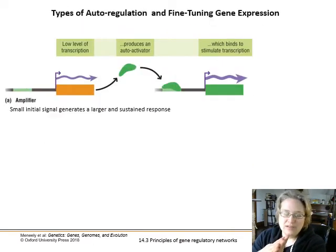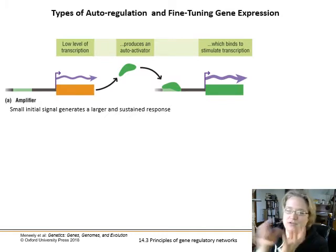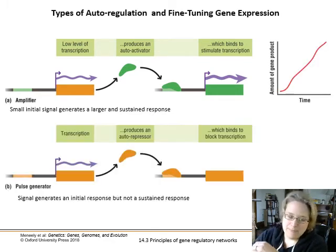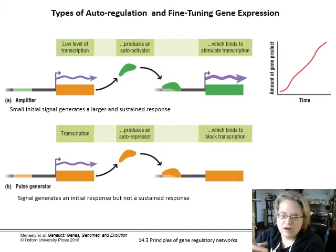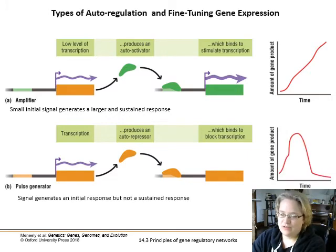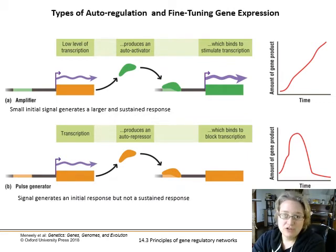There are two different types of autoregulation. The first is called an amplifier, where a low level of transcription produces an autoactivator that binds to itself to stimulate more transcription — like caudal — so you get more and more gene product over time. The second type is called a pulse generator, where there's an initial response and some transcription, but then an autorepressor is produced that binds to block transcription, creating a pulse that ramps up and then slows back down. These two types use either an autoactivator or an autorepressor.